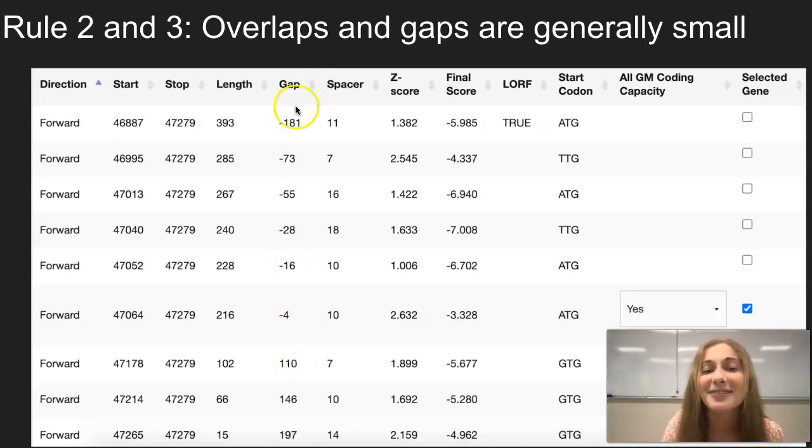So this negative 181 overlap is very large and this 110 gap is also very large. This negative 4 overlap right here is the best option out of all of these choices and it provides even stronger evidence in why we should choose this start of the protein.